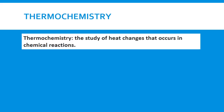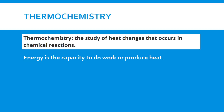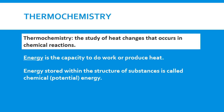So we start with thermochemistry. Thermochemistry is the study of heat changes that occur in chemical reactions, or the changes that occur in physical and chemical processes. We have to remember that energy is the capacity or ability to do work or produce heat. Energy that is stored within the structures of substances is called chemical energy or chemical potential energy. For example, when gasoline burns the potential energy stored in its chemical bonds is released to do work, such as propelling a car.